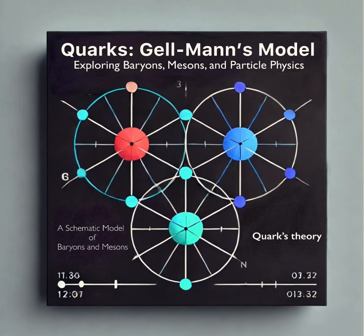Quarks are bound together by a strong force. And this force, it's mediated by particles called gluons. Gluons. Like the glue that holds quarks together. Exactly. But here's the thing. The strong force, it actually gets stronger the farther apart you try to pull those quarks. Wait, so the harder you try to pull them apart, the stronger the force gets? That doesn't make sense. It seems counterintuitive, right?